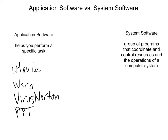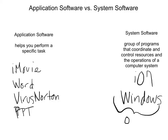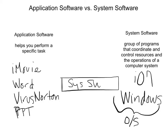We also have system software — a group of programs that coordinate and control resources and the operations of a computer system. System software is bigger; you need it. Examples include iOS 7 and Windows — these are operating systems. System software consists of operating systems and utilities. Think of system software as the foundation, with application software placed above it, because you can't have application software without an operating system.